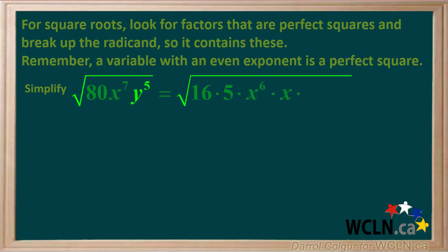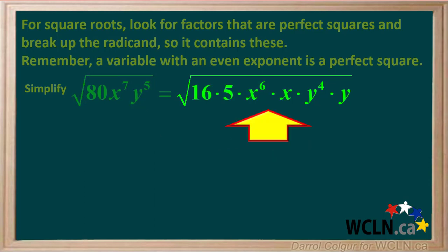Similarly, y to the 5th can be factored to y to the 4th times y, and y to the 4th is a perfect square. So we're left with this expression.